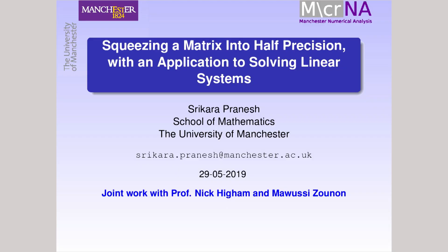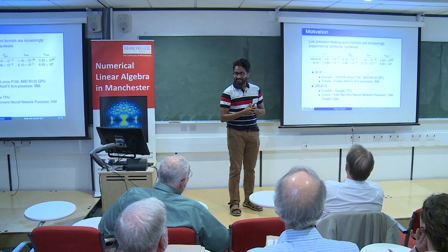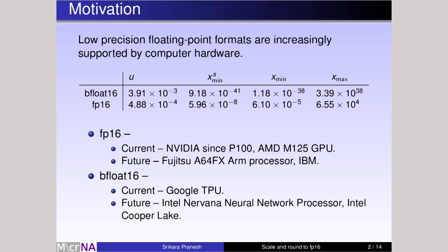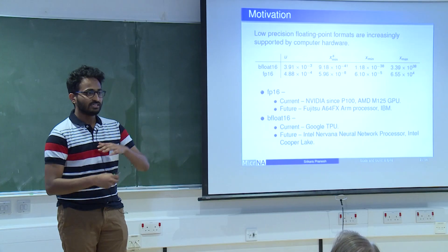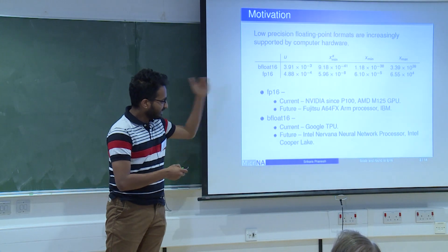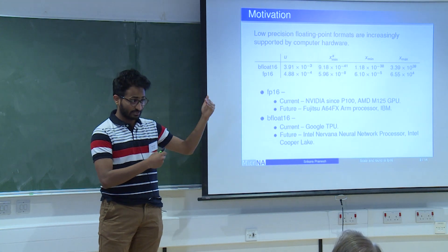Today I'm going to be talking about a specific problem when using half precision. Jack has already said quite a bit about half precision. It is increasingly available in many computer hardware. There are two types: BFloat16 and FP16. FP16 has 5 bits in the exponent and 10 bits in the mantissa, while BFloat16 has 8 bits in the exponent and 7 bits in the mantissa. BFloat16 has the same number of exponent bits as single precision, so its representable range is quite large.